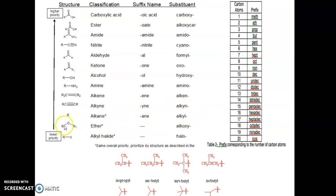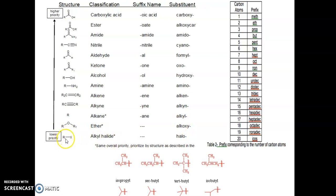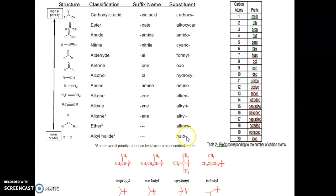For alkyl halide (RX), the halogen atom generally acts as a side chain atom or substituent. The term used is 'halo' — if it is fluorine then 'fluoro', if chlorine then 'chloro', bromine then 'bromo', iodine then 'iodo'.